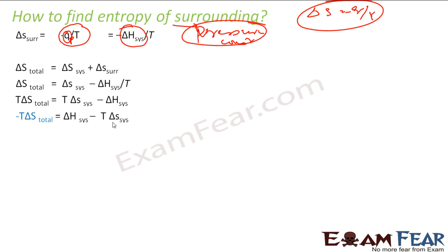And then you get minus T delta S is this, you just flip it, and we will call this value by a new name called G, delta G.